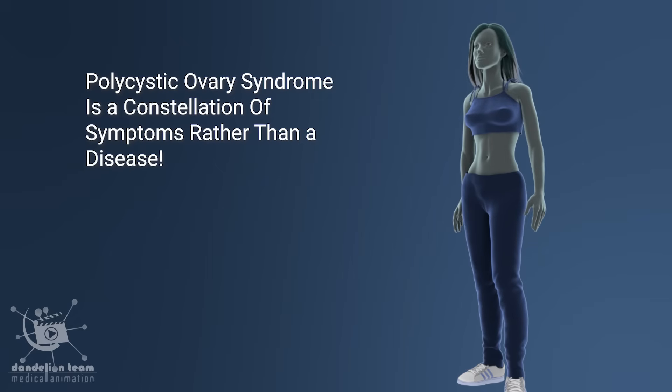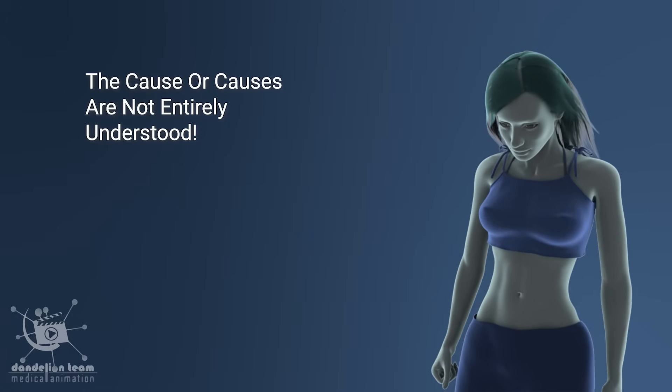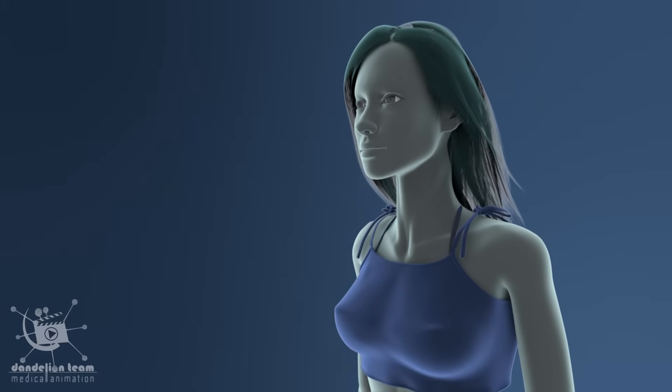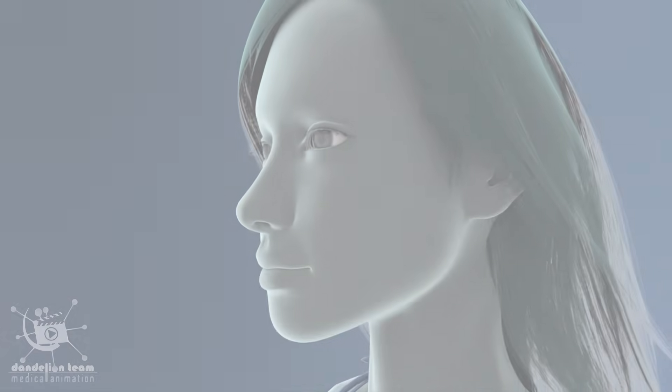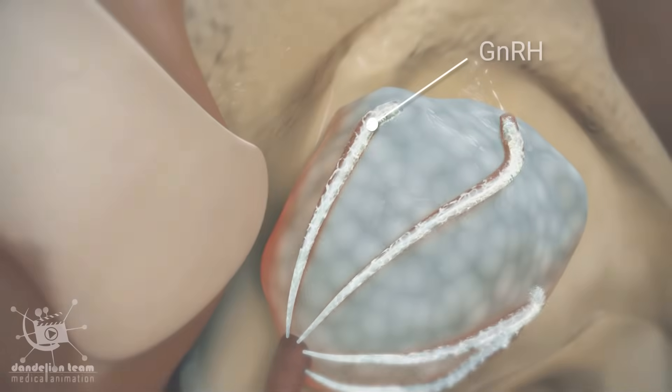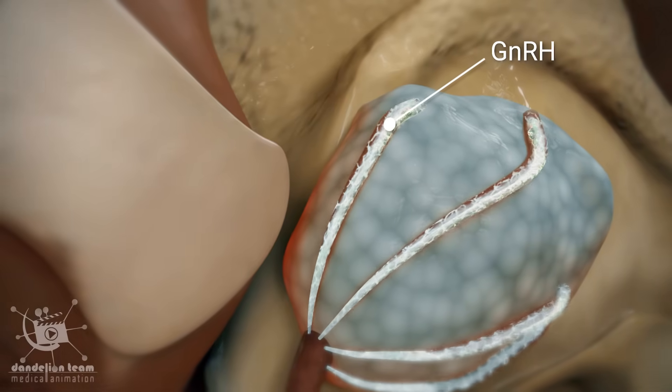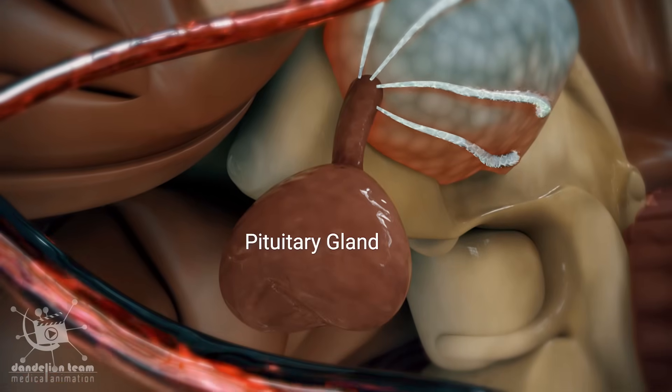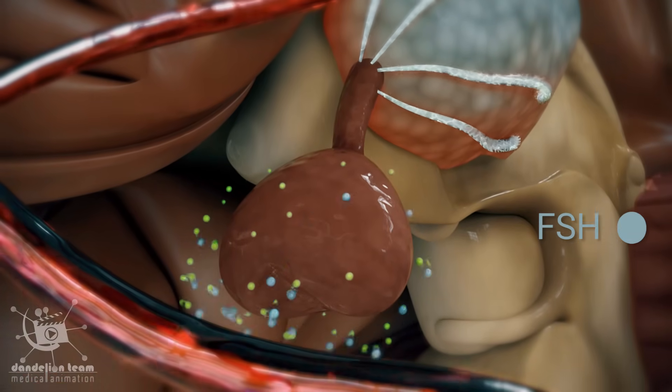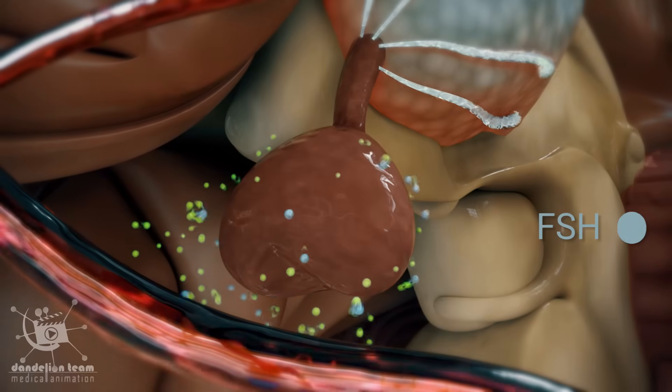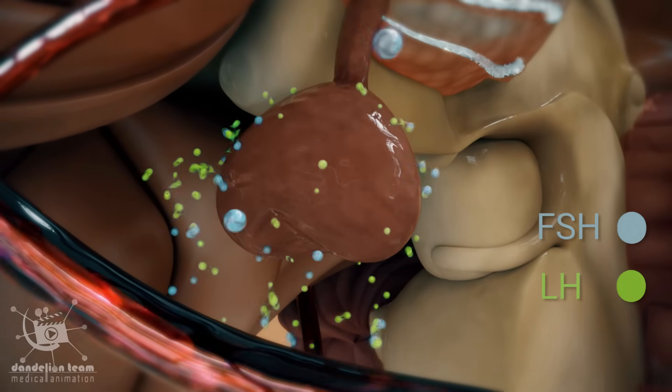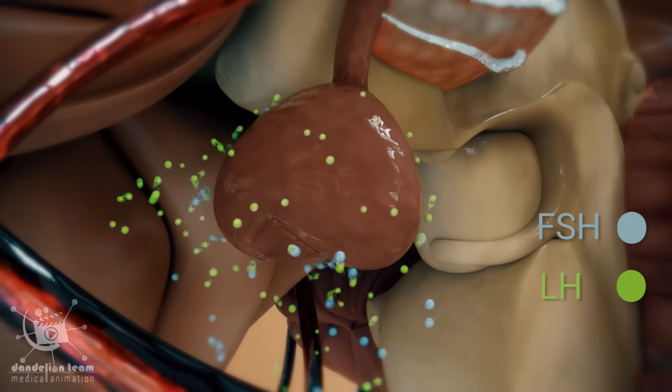Polycystic ovary syndrome is a constellation of symptoms rather than a disease. The cause or causes are not entirely understood. In a normal menstrual cycle, the brain makes the hormone GNRH, which travels in the blood to the pituitary gland. The pituitary gland then releases two hormones: FSH, follicle-stimulating hormone, and LH, luteinizing hormone, which travel in the bloodstream to the ovary.